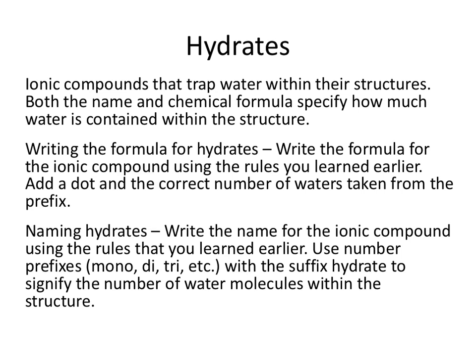The last thing we're going to cover today is hydrates. Hydrates are ionic compounds that trap water within their structures. Both the name and the chemical formula specify how much water is contained within the structure. When writing the formula for hydrates, write the formula for the ionic compound using the rules you learned earlier, then add a dot and the correct number of waters taken from the prefix. When naming them, write the name for the ionic compound and use number prefixes with the suffix -hydrate to signify the number of water molecules.